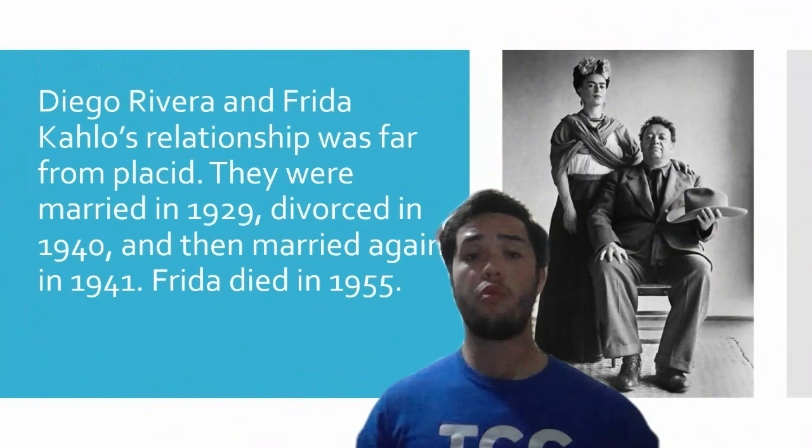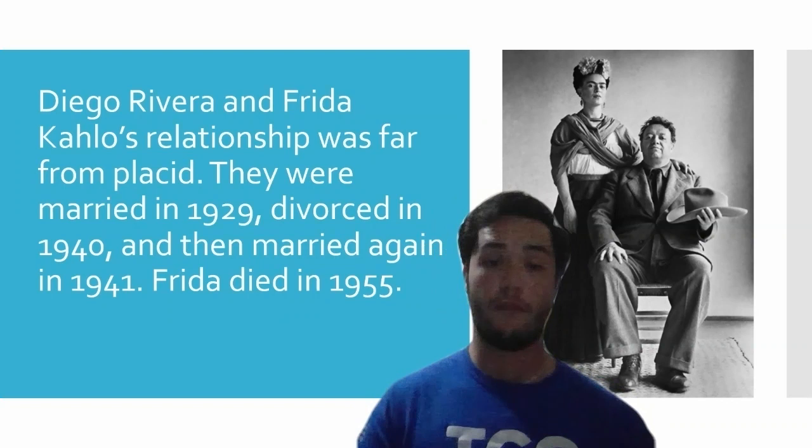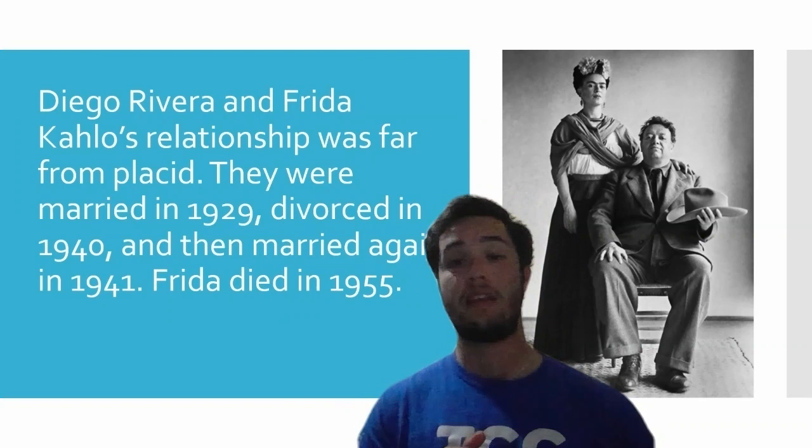He married Frida Kahlo, another Mexican artist, though their relationship was far from classic. They married in 1929, divorced in 1940, then remarried in 1941. Frida died in 1955, two years before Diego Rivera died.